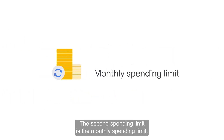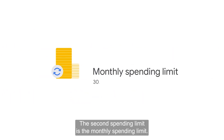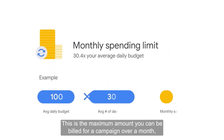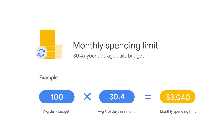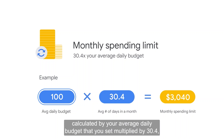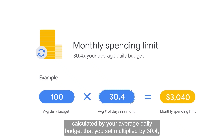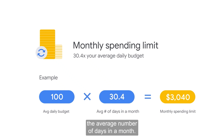The second spending limit is the monthly spending limit. This is the maximum amount you can be billed for a campaign over a month, calculated by your average daily budget that you set multiplied by 30.4, the average number of days in a month.